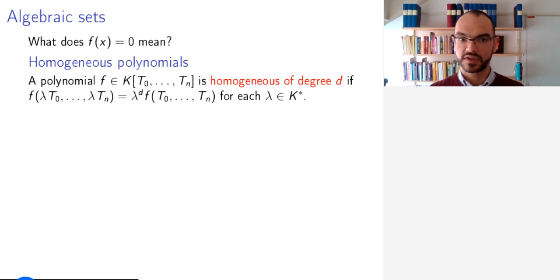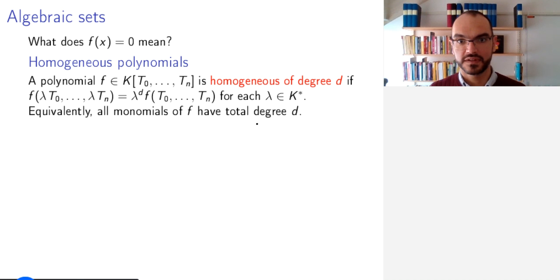The solution is to look only at homogeneous polynomials. A homogeneous polynomial of degree d is a polynomial such that when you evaluate it at some global scalar λ times the indeterminates, it is some scalar, namely the same scalar to the power d, times the polynomial at the original indeterminates. And this should hold for any non-zero scalar λ. Equivalently, all monomials of f have total degree d.